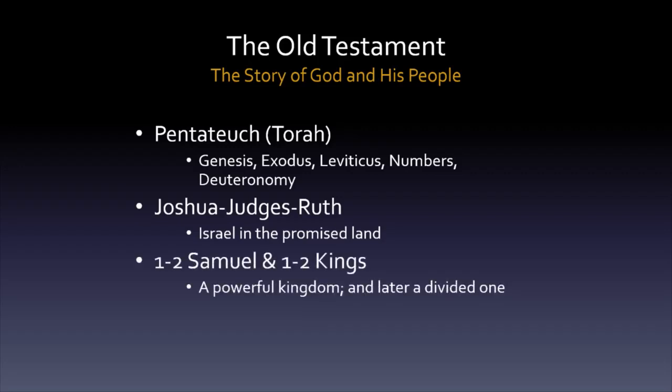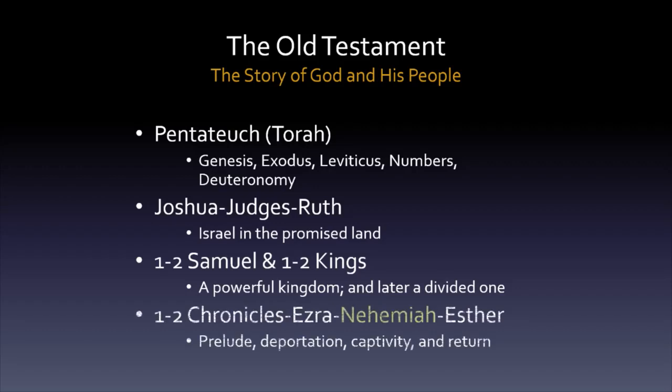Eventually Israel becomes a monarchy, and 1 and 2 Samuel and 1 and 2 Kings are the stories of Israel, first as a single united kingdom, and then later split into separate northern and southern nations. Although there is some overlap with Samuel and Kings, 1 and 2 Chronicles is really the prelude to the stories of Ezra, Nehemiah, and Esther.